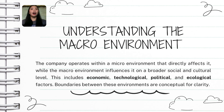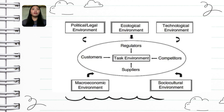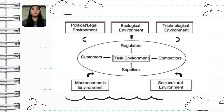Understanding the Macro Environment. The company operates within a micro environment that directly affects it, while the macro environment influences it on a broader social and cultural level. This includes economic, technological, political, and ecological factors. Boundaries between these environments are conceptual for clarity. Understanding the macro environment means keeping an eye on the bigger picture — things like the state of the economy, political changes, social trends, new technologies, environmental issues, and global events. By paying attention to these broader influences, businesses can better navigate challenges and seize new opportunities. For example, noticing a shift in consumer preferences or a new tech breakthrough can help a company stay ahead.